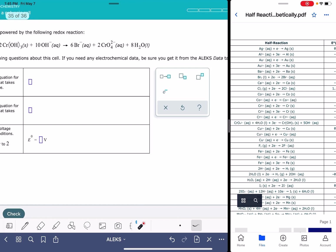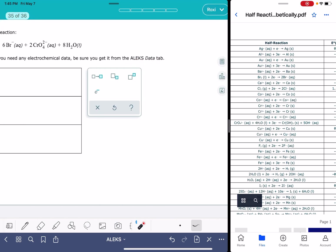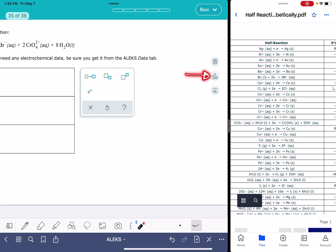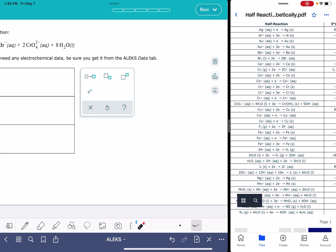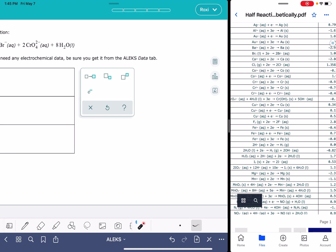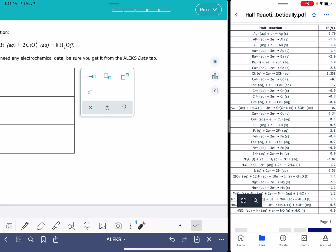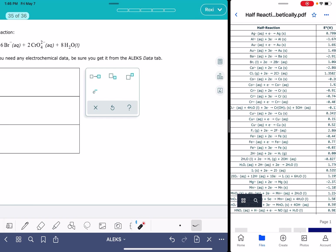We are going to need to be using data from the Alex data tab, which is this link right here, and inside this data tab, you're going to find this table of half reactions, which is what I have pasted over here as a PDF. We're going to actually use this not just to get the voltage, but to help us write these half reactions.